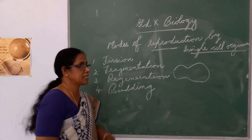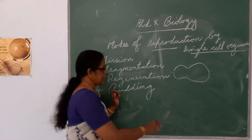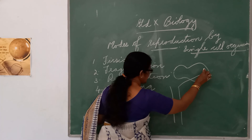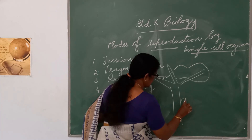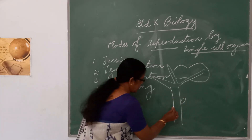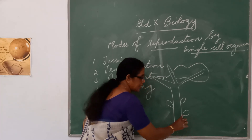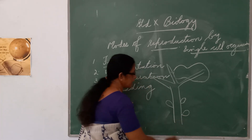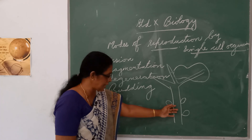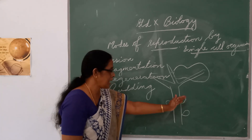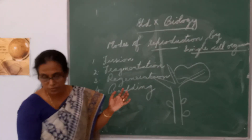The next one is budding, which can usually be seen in hydra. Hydra looks like a plant but it is an animal. A small bud appears in its body. When that bud matures, it detaches from the body. Each bud develops into a new individual. That is known as budding.